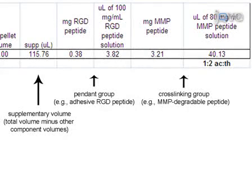Also calculate the amount of the pendant peptide containing the functional adhesive domain with amino acids cysteine, arginine, glycine, and aspartate. The cysteine is for tethering to the polymer.